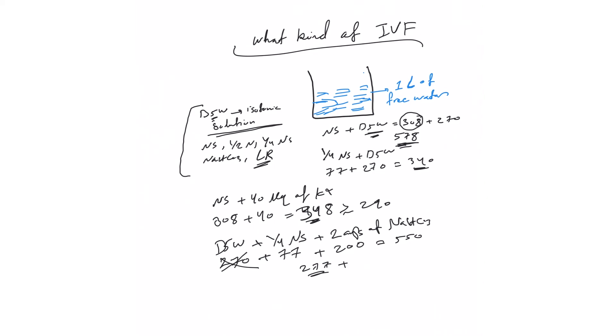If I add 40 mEq of potassium, then there will be around 217, also close to isotonic. If you add 80 mEq of potassium, this will become hypertonic.